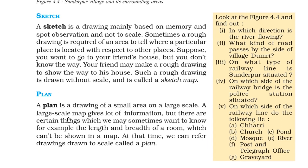Then we have a plan. A plan is a drawing of a small area on a large scale. A large scale map gives a lot of information, but there are certain things we may want to know — for example, the length and breadth of a room — which cannot be shown on a map. At that point, we refer to drawings drawn to a scale, which is called a plan. This is the difference between a sketch and a plan.